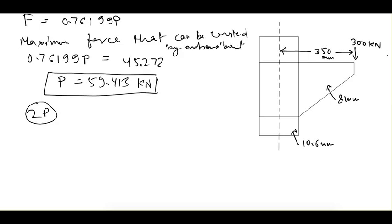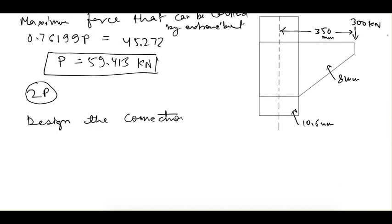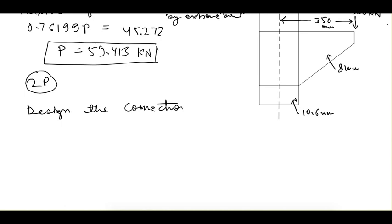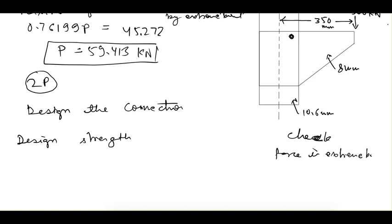Now let's see the next question. Here we have to design this connection; we have been given the load and eccentricity. This is also an in-plane connection. For designing, first we have to find out the design strength of the bolt, then find out the number of bolts, place them, and check that the force in the extreme bolt should be less than or equal to the bolt strength.